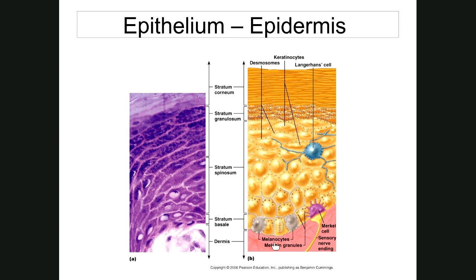Number two is the stratum spinosum, meaning 'spiny layer,' with eight to ten rows of cells. The cells are bound by desmosomes, and when this tissue is processed for a histology slide, the cells shrink a bit and you can see the desmosomes between the cells — giving the cells a spiny or prickly appearance. The processing dehydrates the cells, causing shrinkage that pulls the desmosomes tightly between cells. That's why this layer is named the stratum spinosum.